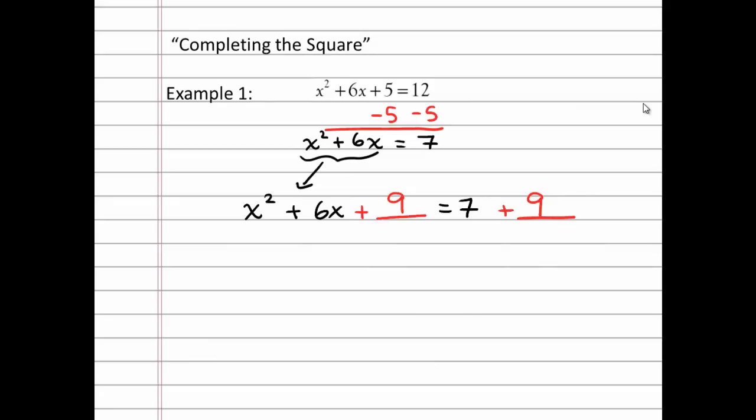Now let's actually go through the process of going forward now that we know what that third term is. So once I have my plus 9, I can factor it into (x + 3)(x + 3) = 16, which is (x + 3)² = 16.